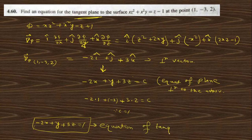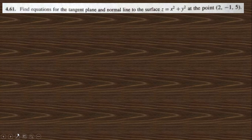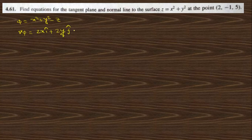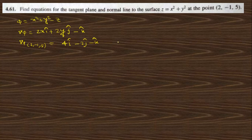Problem 4.61: find the equation of the tangent plane and normal line to the surface z = x² + y² at point (2, −1, 5). For the tangent plane, take φ = x² + y² − z. Then grad φ = 2x·i + 2y·j − k. At point (2, −1, 5): grad φ = 4i − 2j − k. This is the normal vector to the surface.